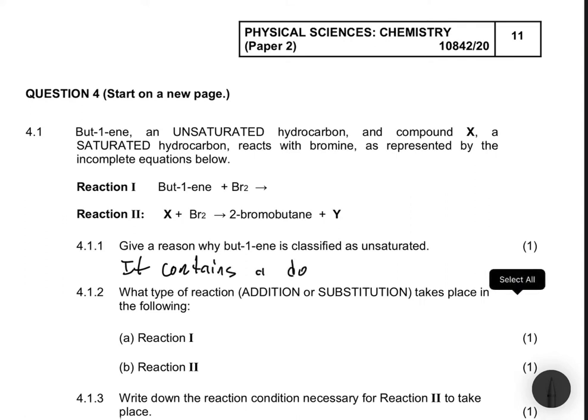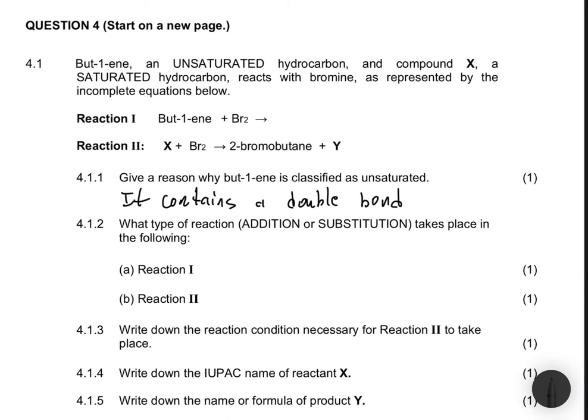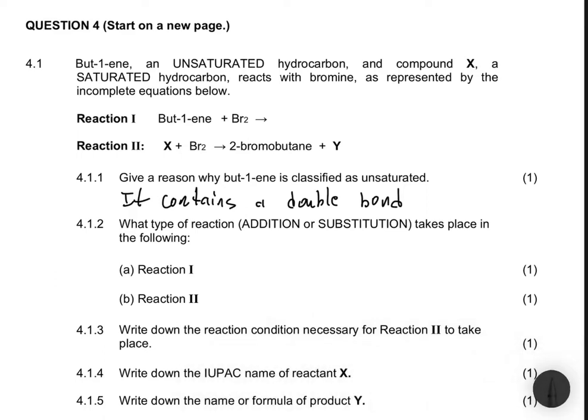Now let's move to 4.1.2, which says what type of reaction, addition or substitution, takes place in the following. Reaction 1: we have but-1-ene plus bromine. Because this organic compound here is unsaturated, it can only go under addition reaction.